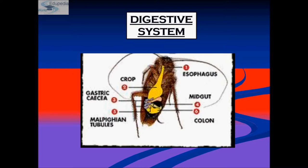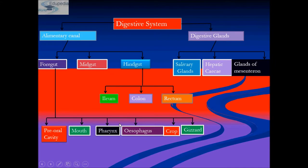The body of the cockroach is segmented into three portions: head, thorax, and abdomen. Mouth parts are attached on the ventral side of the head and surround the oral cavity, which faces downward. The different mouth parts are: labrum (upper lip), mandible, maxilla, labium, and then the alimentary canal.